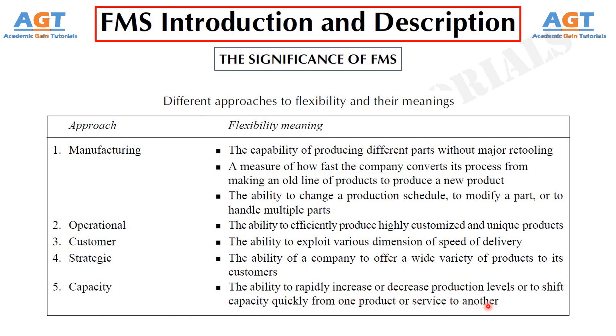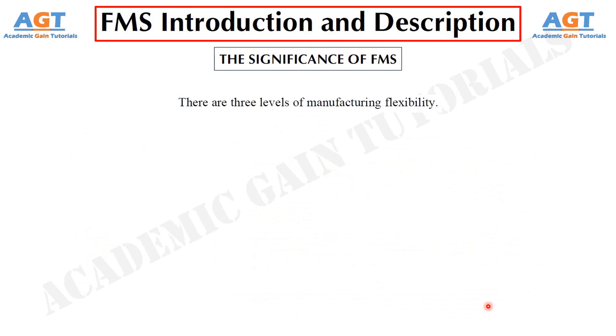So, what is flexibility in manufacturing? There are three levels of manufacturing flexibility. Number 1 – Basic flexibilities.